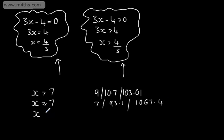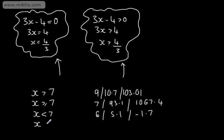If x is less than 7, the number we're looking for is less than 7, so we could have 6, 5.1, or negative 1.7, but we couldn't include 7. If x is equal to or less than 7, then we could include 7 — so we could also have negative 1 or 0.1. All of these values satisfy it.